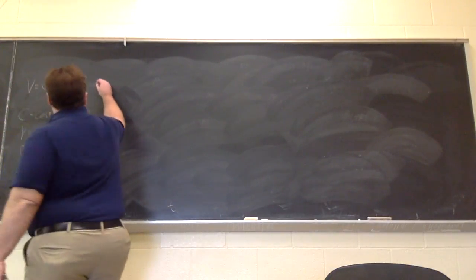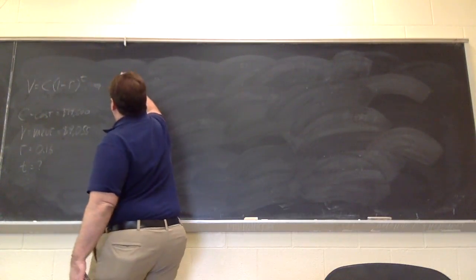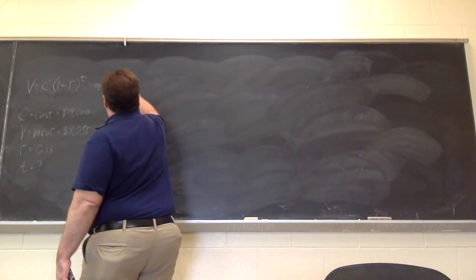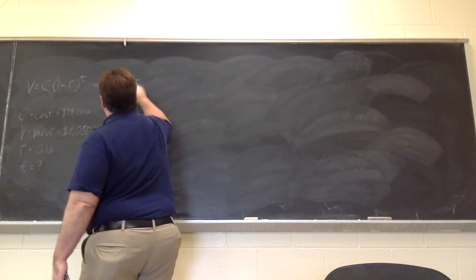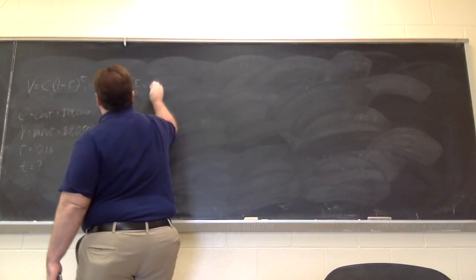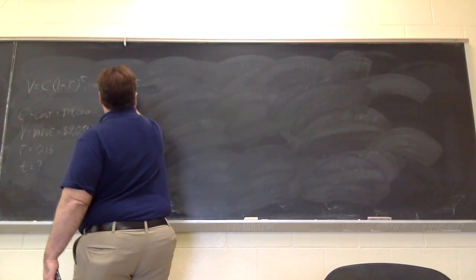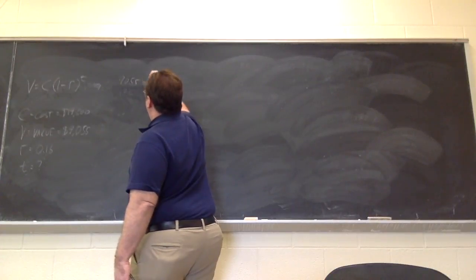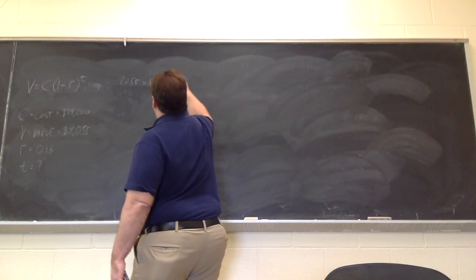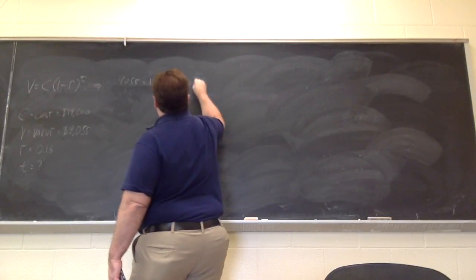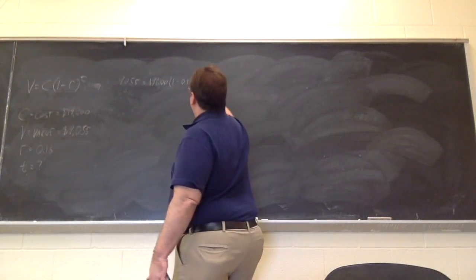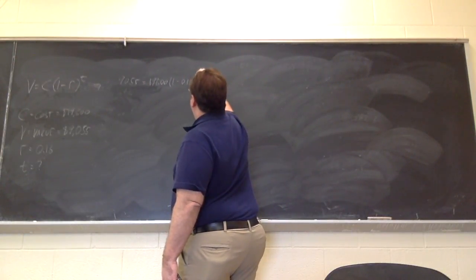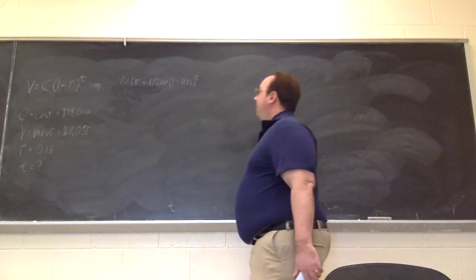So we substitute in our numbers. So the current value of 9,055 is equal to 19,600, and then 1 minus 0.16, so 0.16 is the rate in decimal, raised to the t power.